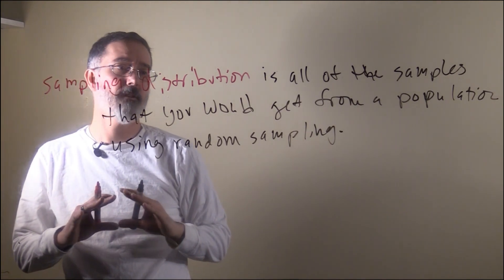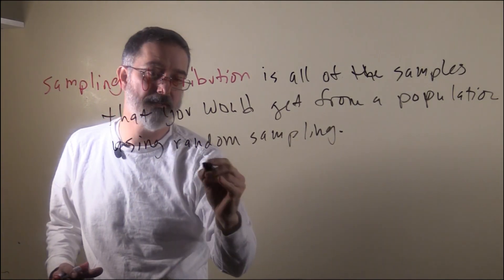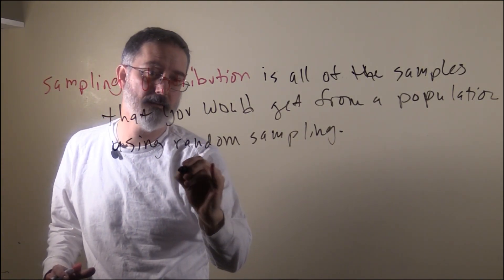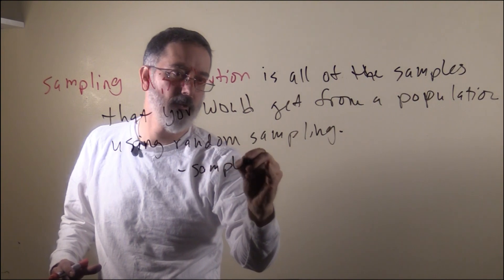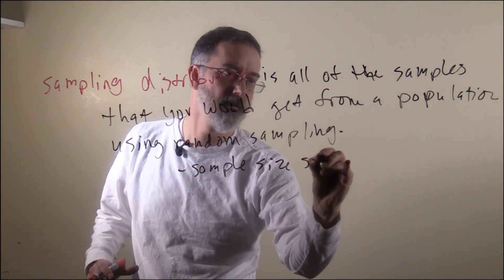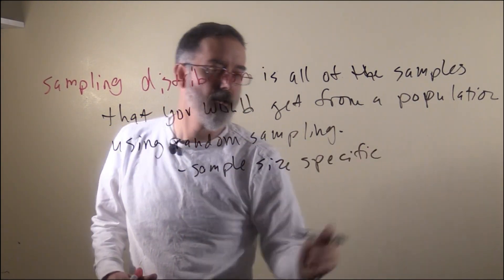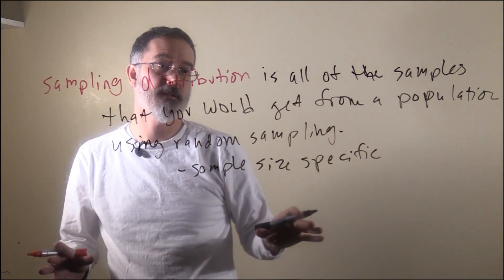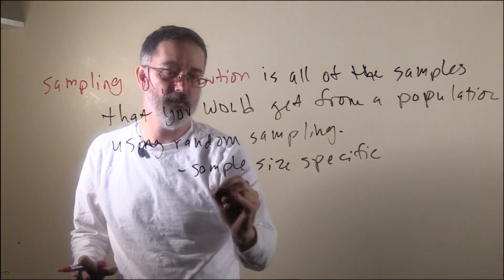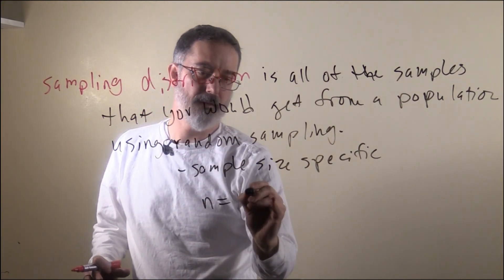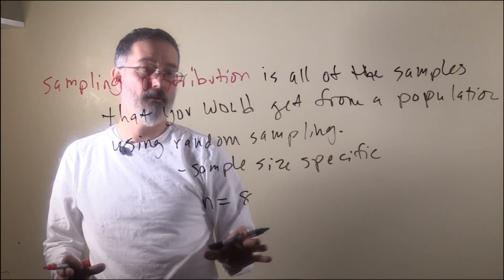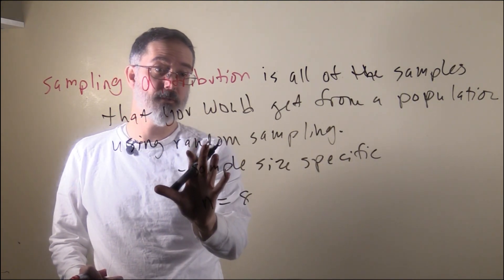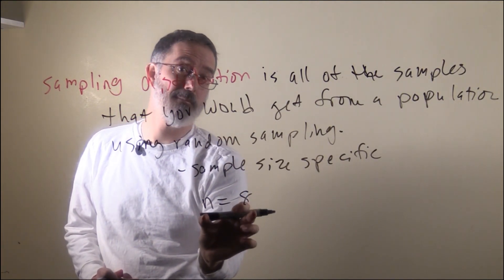These are really specific to sample size — they are sample size specific. So if you do a research study and your sample size is 8, then what you are going to do is create a sampling distribution from the population with sample sizes equal to 8. Now I will illustrate how sampling distribution works.